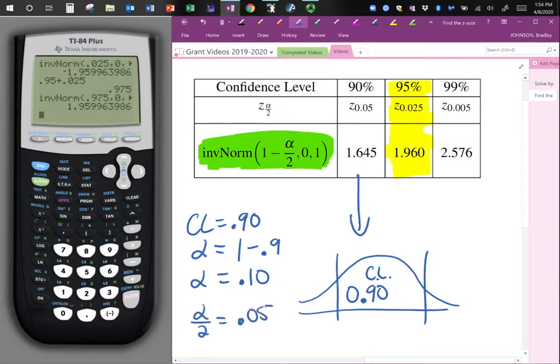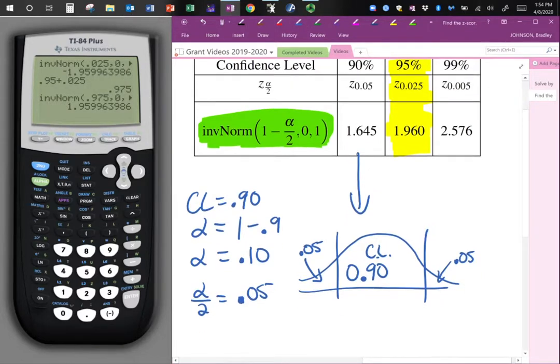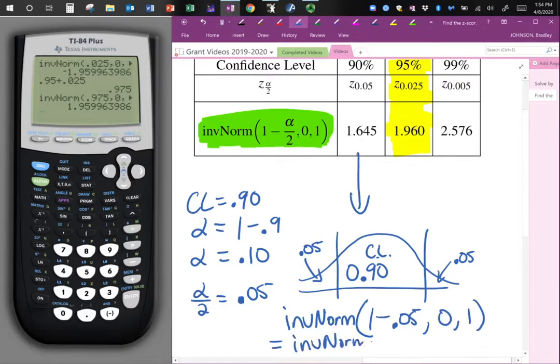And what's half of that? Well, half of that is 0.05. Right? You could think 90%. Really, there's 10% left over. So, 5% goes in one tail, 5% goes in the other tail. If you add that all up, it adds up to an area of 1. Now, what you can always do is do inverse norm to find your z-score. And you see in my formula here, I've put 1 minus alpha over 2. So, 1 minus 0.05, 0, 1. When you do this, this is really inverse norm of 0.95, 0, 1.